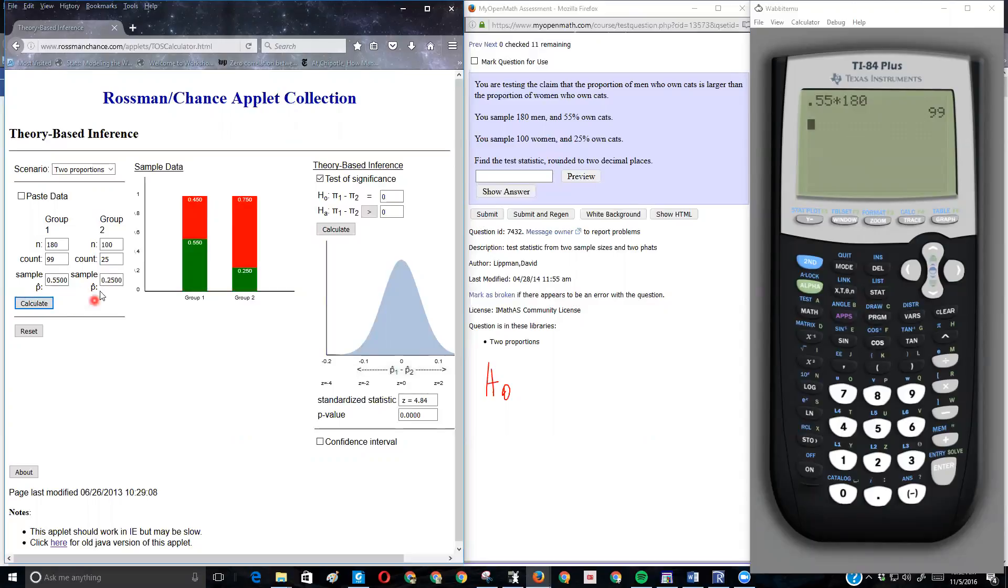I'm going to calculate that. We've got our significance test all set up. Let's calculate it. This applet is telling me that the test statistic, notice it's a Z score, is 4.84.